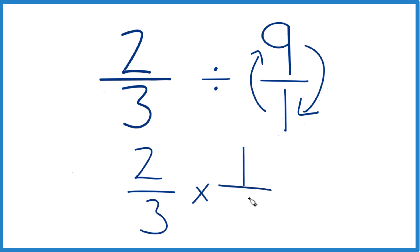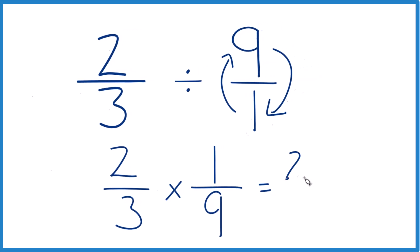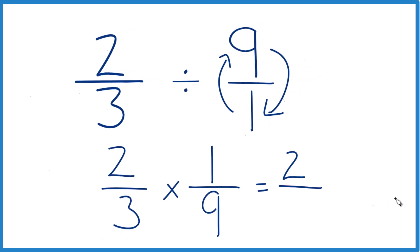That's 1/9. So with fractions, we'll multiply the numerators. 2 times 1 is 2, and then we'll multiply the denominators. 3 times 9 is 27.